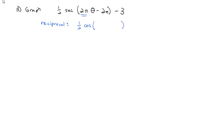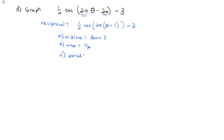To find the key features of the cosine, we factor out the 2π: cosine of 2π(θ − 1) − 3. The midline is down 3 due to the −3. The amplitude is ½ due to the ½ in front. The period is 2π divided by 2π, which equals 1. There is also a horizontal shift: the −1 inside the parentheses shifts the graph right 1 unit.